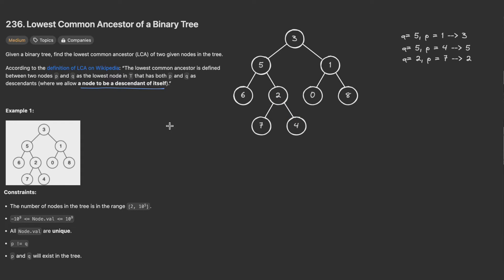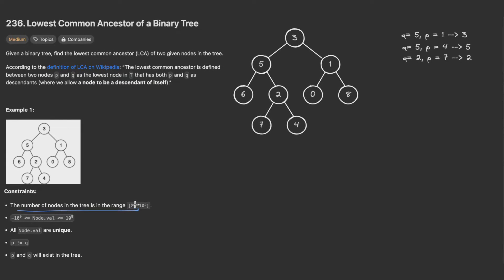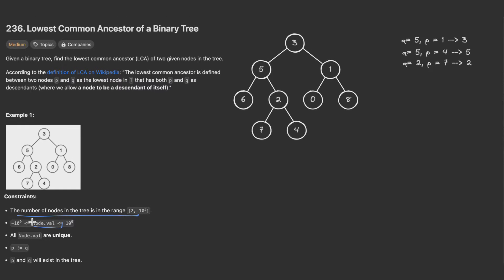First let's go through the constraints. The number of nodes is between 2 and 10 to the power of 5. The node value is between minus 10 to the power of 9 and 10 to the power of 9.